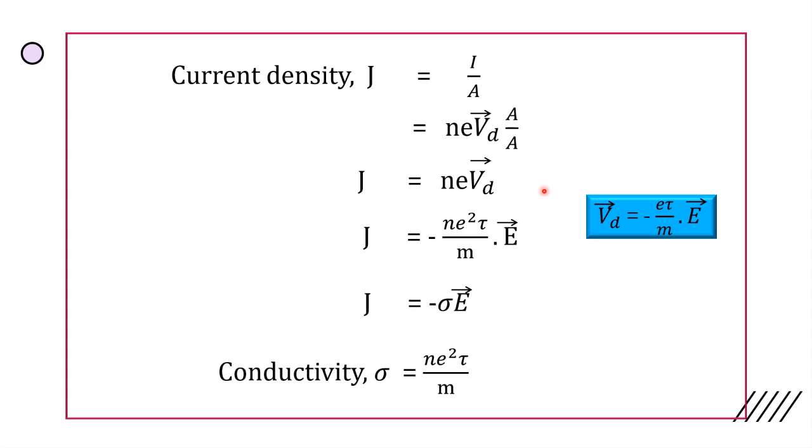And again, Vd is equal to minus e tau by m into E. Substituting, we get n e square tau by m into E. That is conductivity sigma is equal to n e square tau by m. Current density J is equal to minus sigma E.